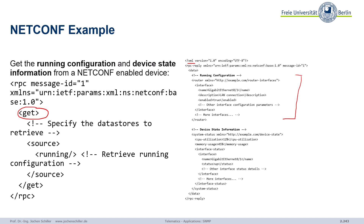When you perform this get-in operation, you can basically download this running configuration. I also asked for a bit more device state information, which contains details about the device's operational state — like interface status (up/down), CPU utilization, memory usage, and other real-time data. For example: 45% memory usage, 12% CPU, the GigabitEthernet is up, and so on.